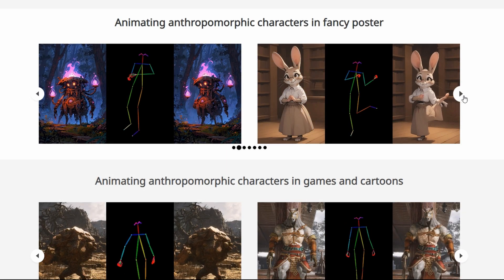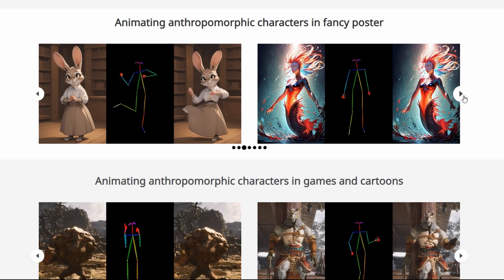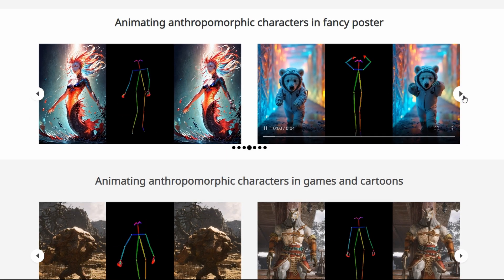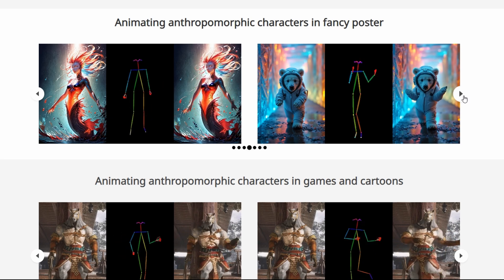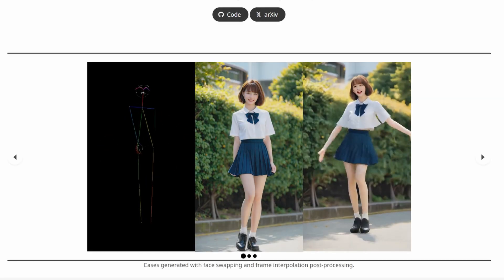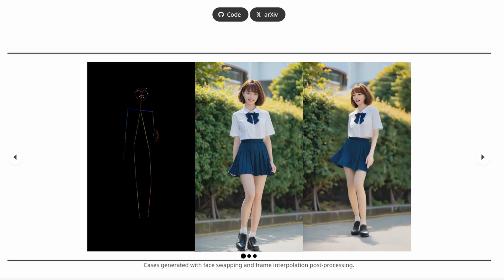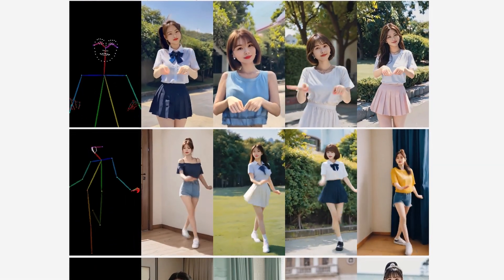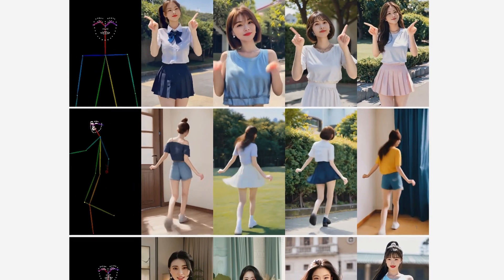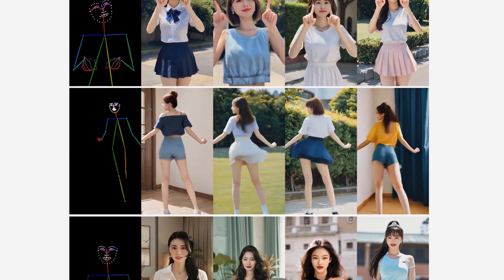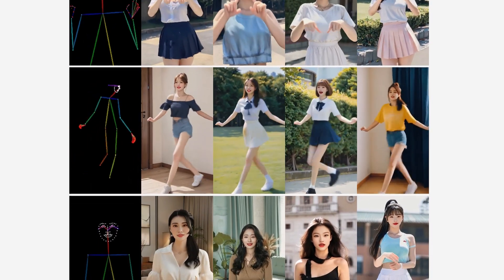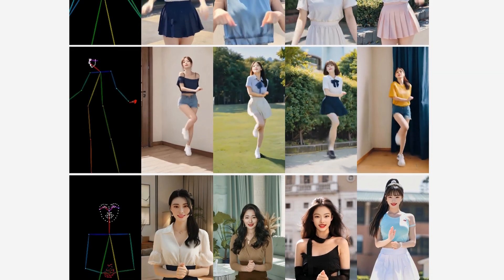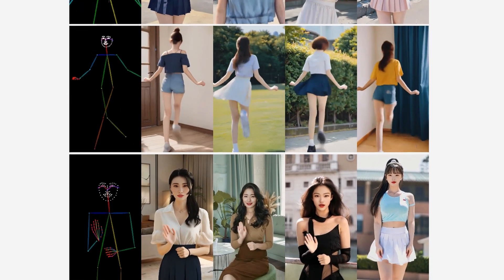Animate X is specifically designed to animate cartoon characters, animals, and other non-human creatures. Previously, most open source AI tools like Mimic Motion only worked well for animating humans. You could take a reference photo of a person and map it onto a pose video allowing the human character to move. But when it came to non-human characters like cartoons or creatures with weird limbs, those tools just didn't cut it. Animate X solves this challenge.